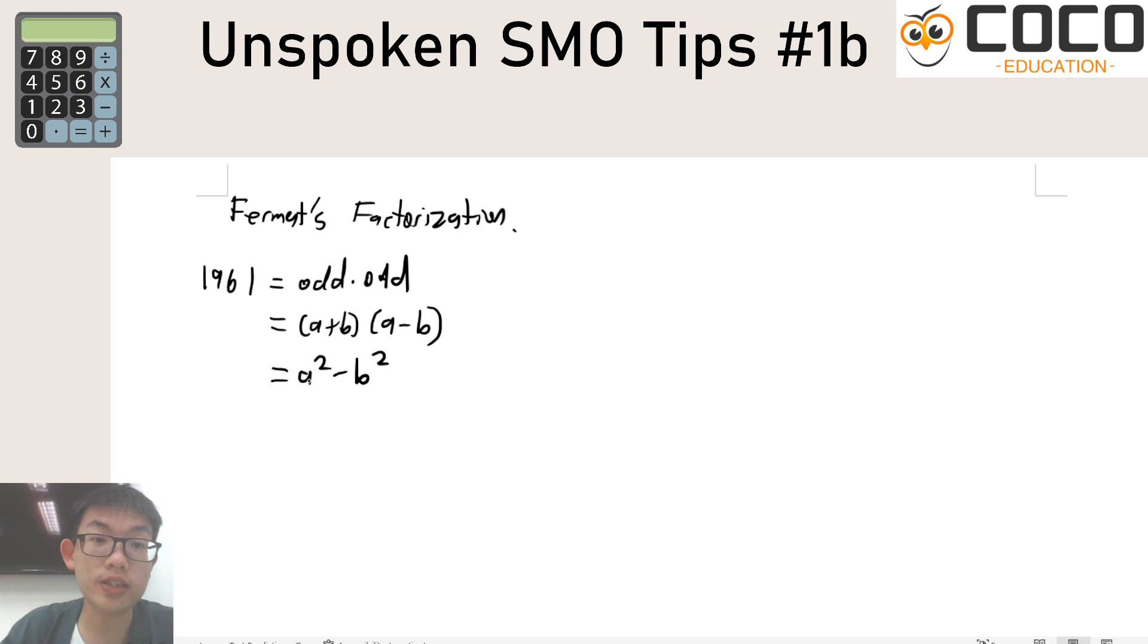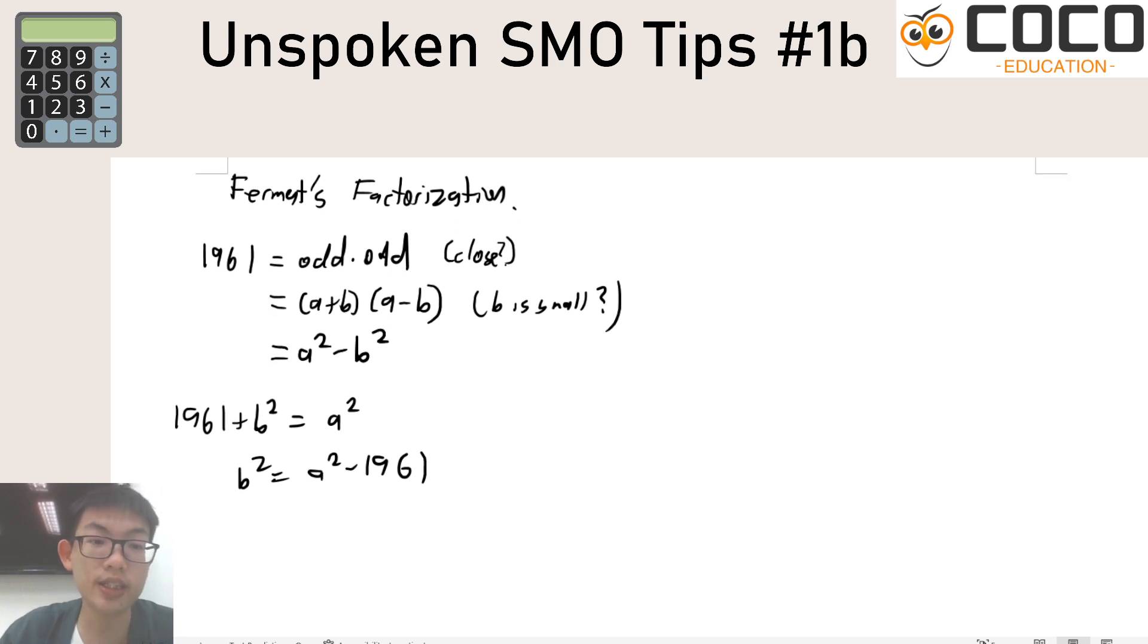And therefore if you wanted to find two close numbers it should imply that b is small if the two factors are close and therefore both quite big. Thankfully if we wanted to test this out this should be true but more importantly this should be true. So you can try to let a be a square number that is slightly more than 1961 and if we tested it out a equals to 45, 45 squared minus 1961 is actually 64 which is 8 squared and so that would imply that 1961 is 45 plus 8 times 45 minus 8. That would be the factorization of 1961.